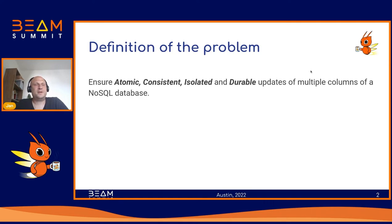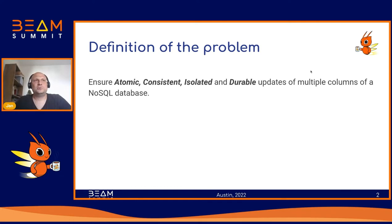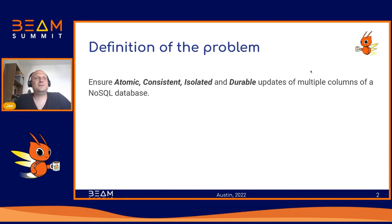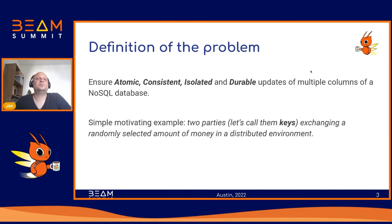First, we will define the problem that we are trying to solve. I think everyone has heard about transactions. We want to ensure atomic, consistent, isolated, and durable updates of multiple columns in a NoSQL database. NoSQL databases are known for the fact that they don't typically have transactions. And if you have concurrent updates to a single column, you may end up with an inconsistent state of the database. So this is what we want to prevent.